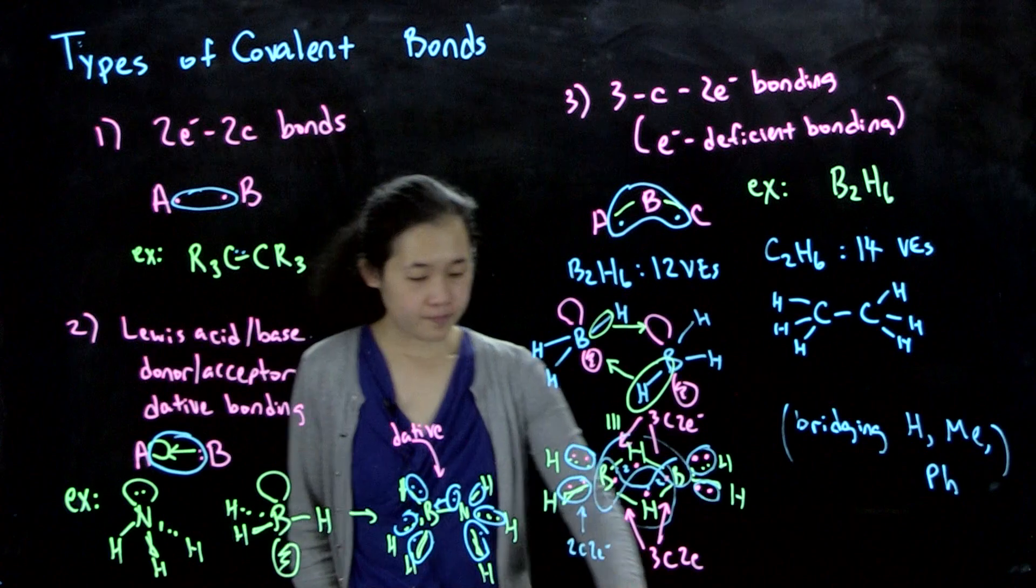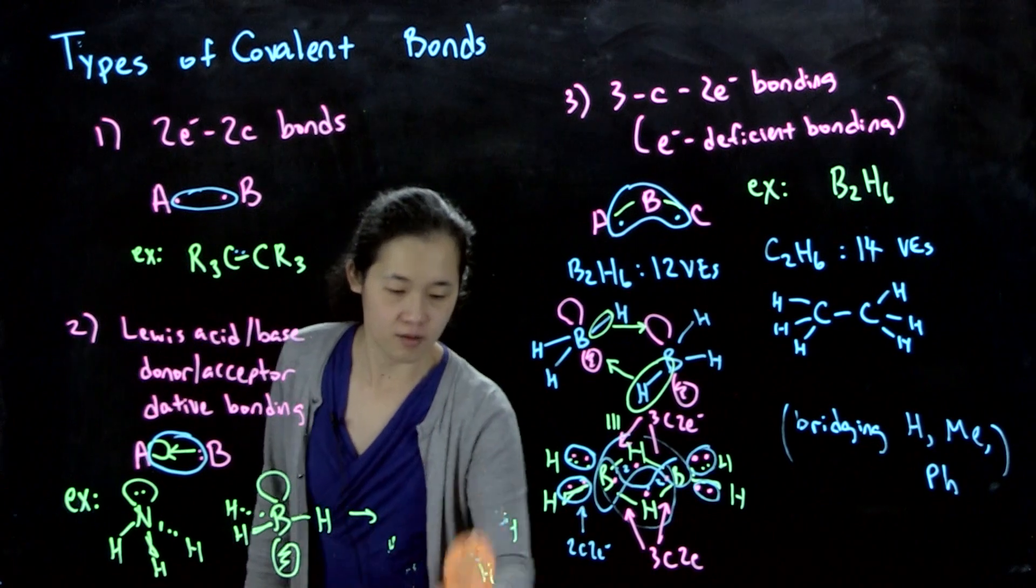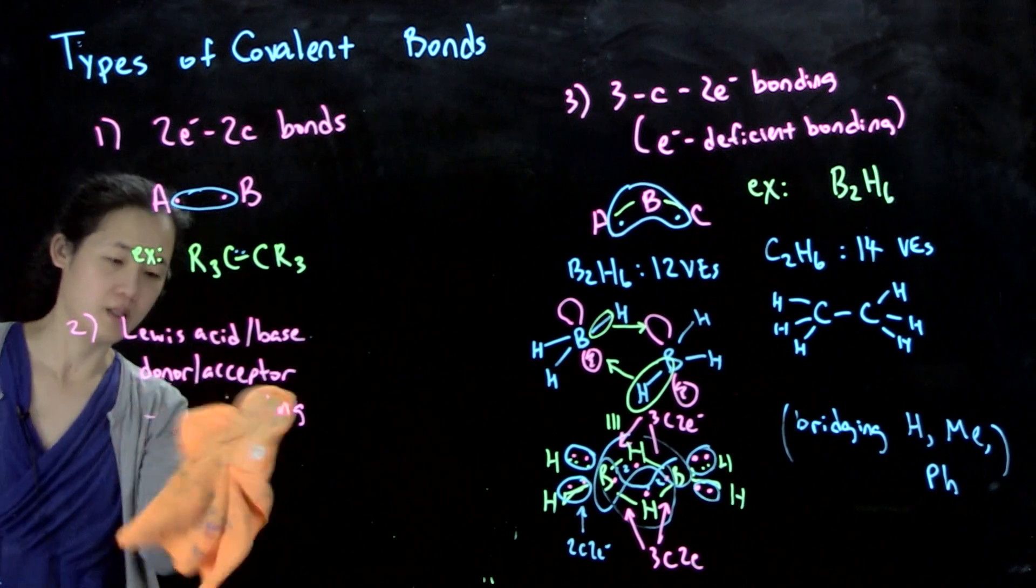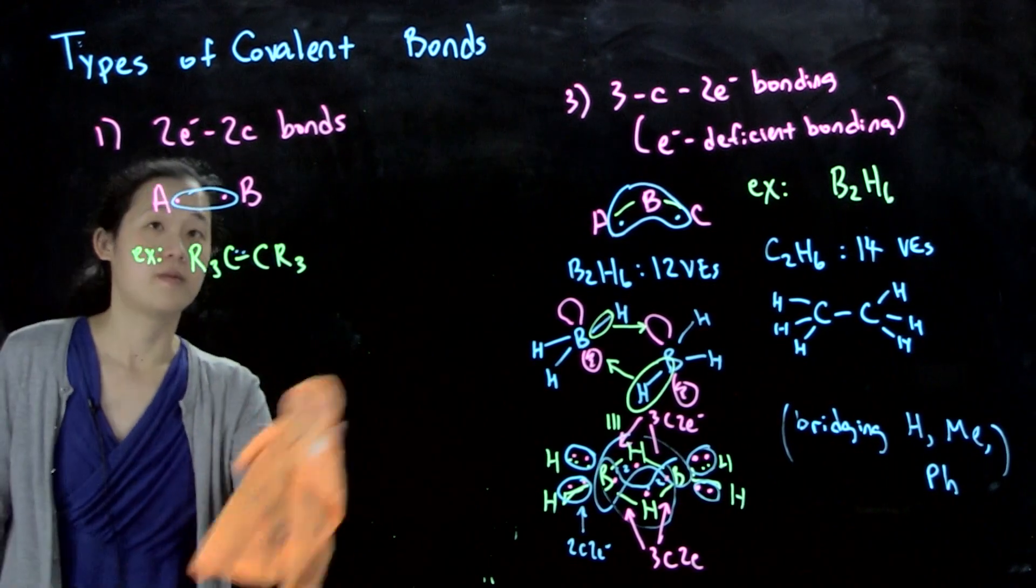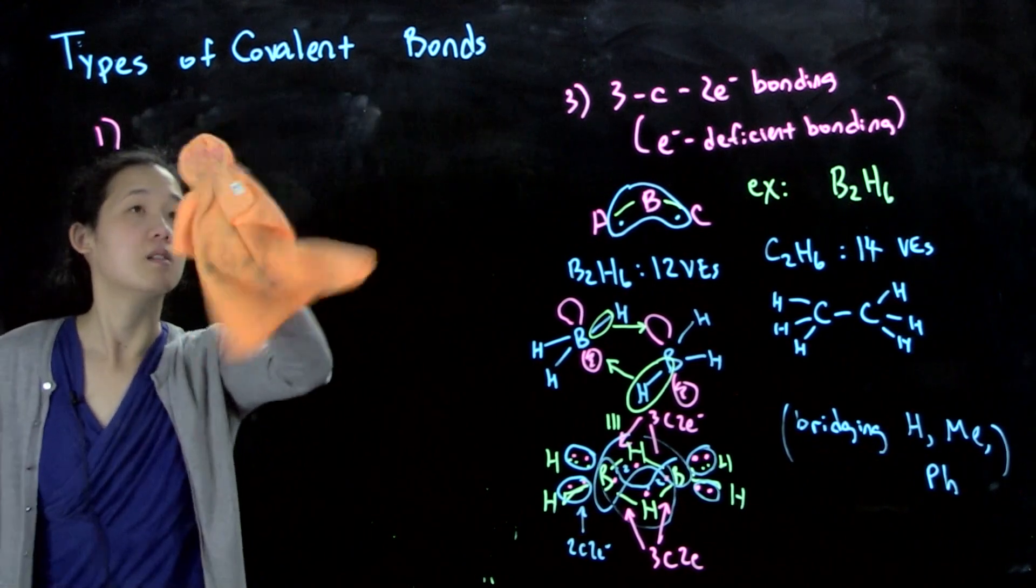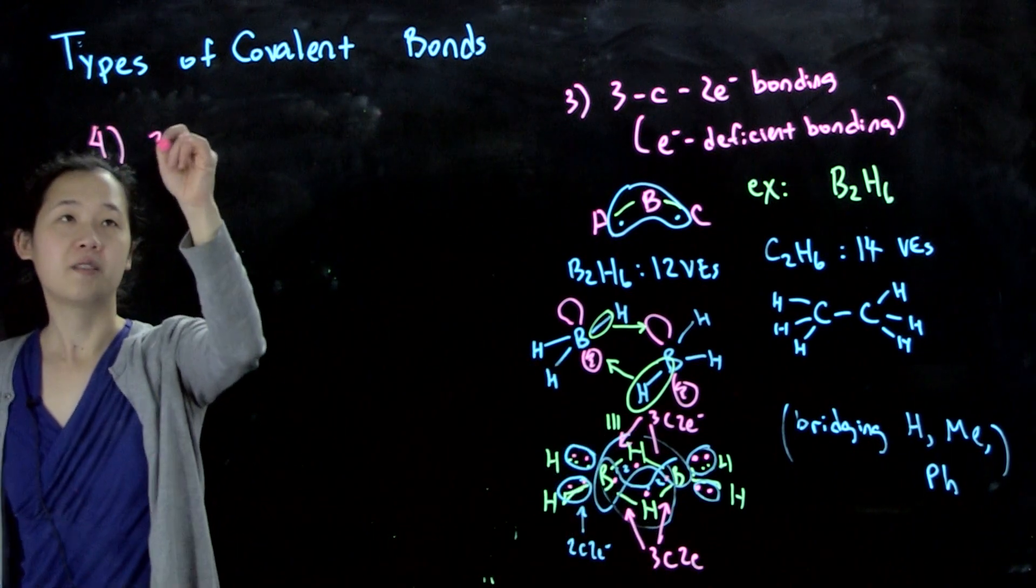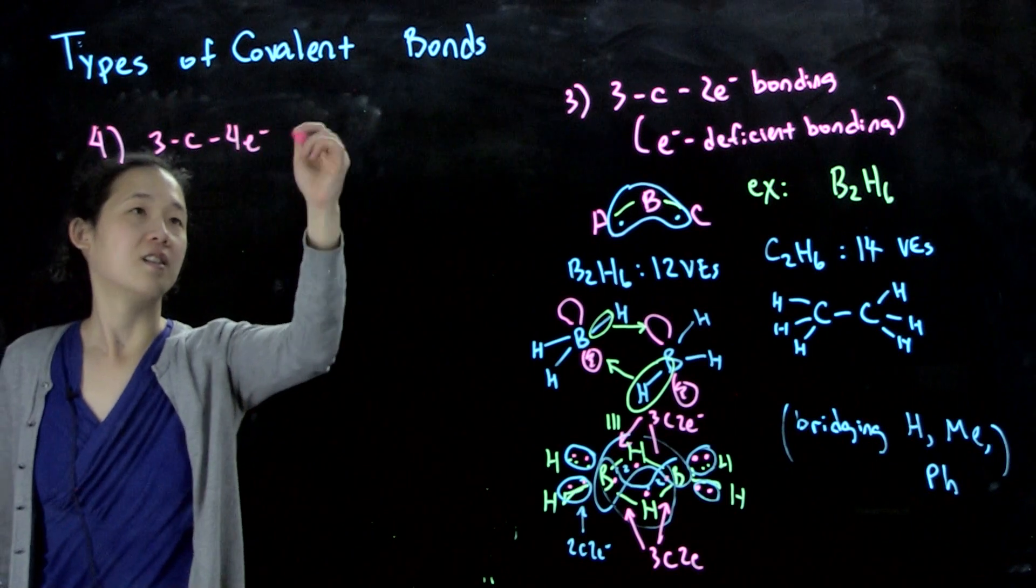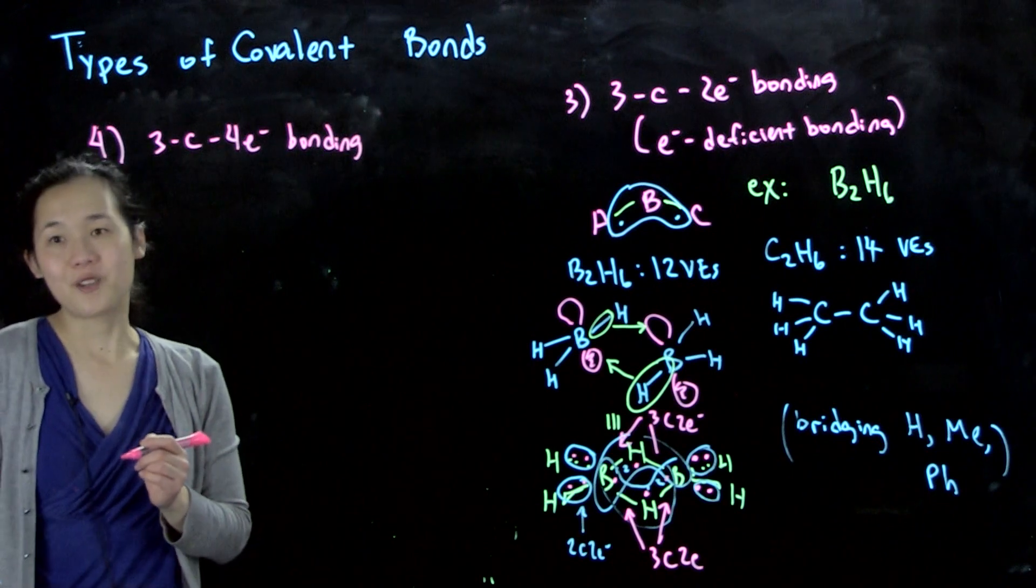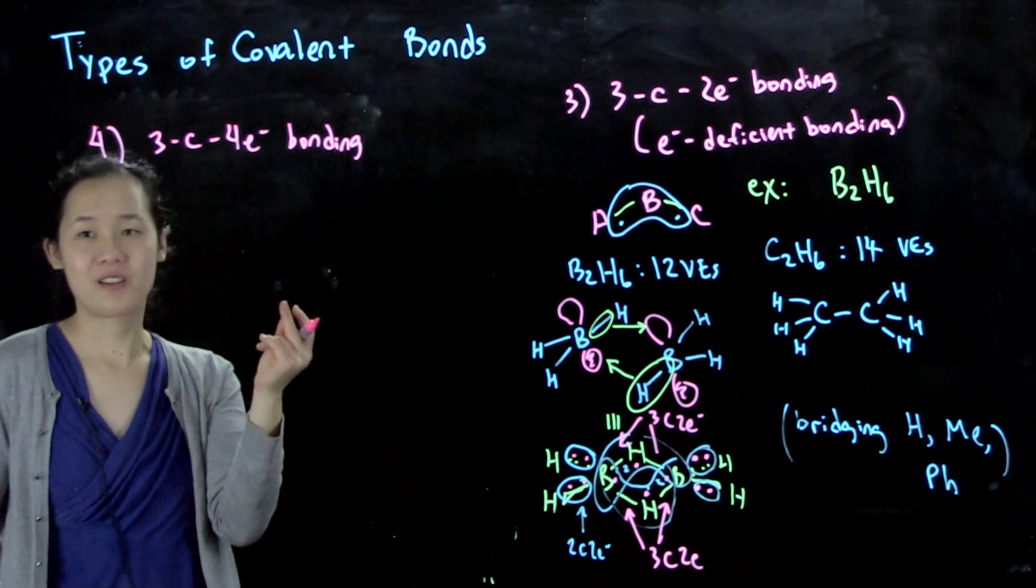Lastly, there's a fourth type, which you've actually seen already on your problem set. Number 4: this will be three centered, four electron bonding. I'll explain what this is.